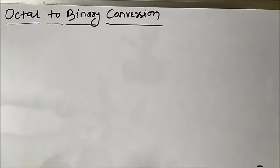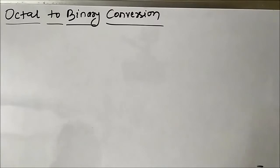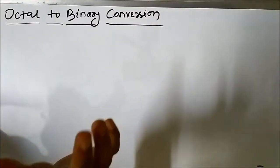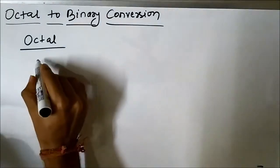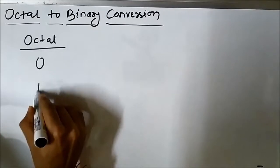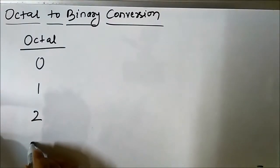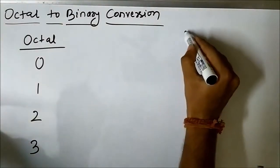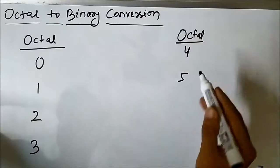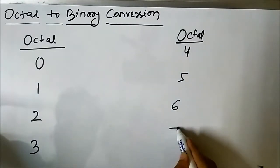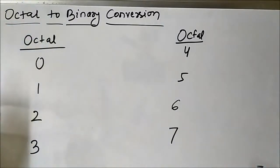Before we go deep into this, we must first understand something about the octal number system and how it can be related with the binary number system. In the octal number system, eight symbols are used: zero, one, two, three, four, five, six, and seven. These eight symbols are used, from zero to seven.